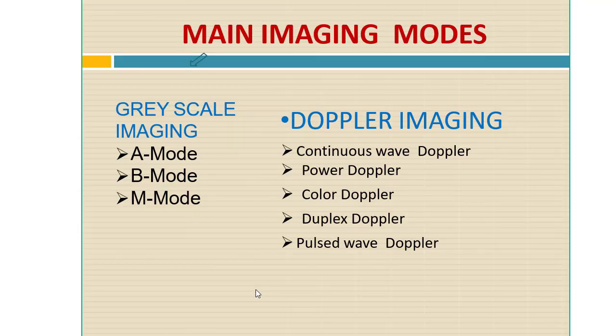The main modes of ultrasonography in grayscale imaging are A-mode, B-mode, and M-mode. There are also some Doppler imaging modes, which we will learn about in detail later.